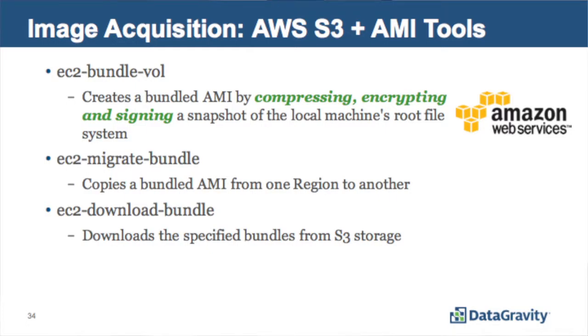The AMI tools, this is where you can compress, encrypt, sign, download. This is probably your best bet. It could take a very long time depending on the size of the data. But at least you have compression, encryption, and signing of the data. You can pull it down locally, analyze the snapshot as if you would any other system.